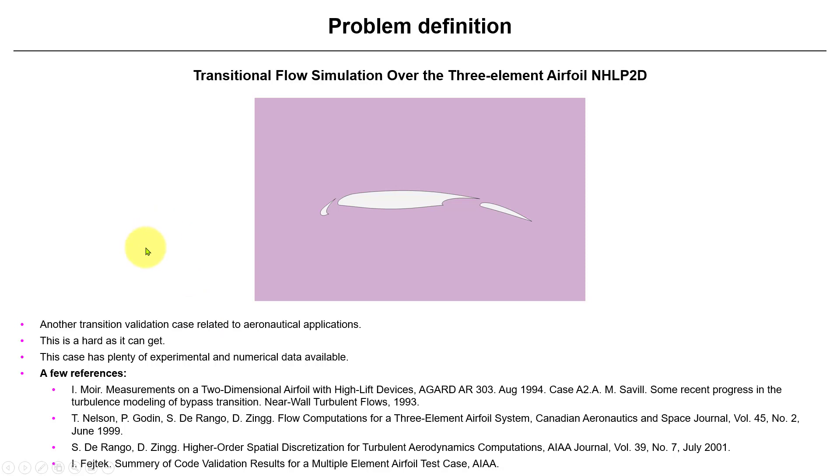In this case we have another classical case targeted now for the aerospace aeronautical community. We have the three-element airfoil, and I have to say that this is as difficult as it can get because we're modeling transition to turbulence and we also want to capture the stall, maximum lift, and angle of attack. The maximum CL coefficient is difficult to capture in airfoil.